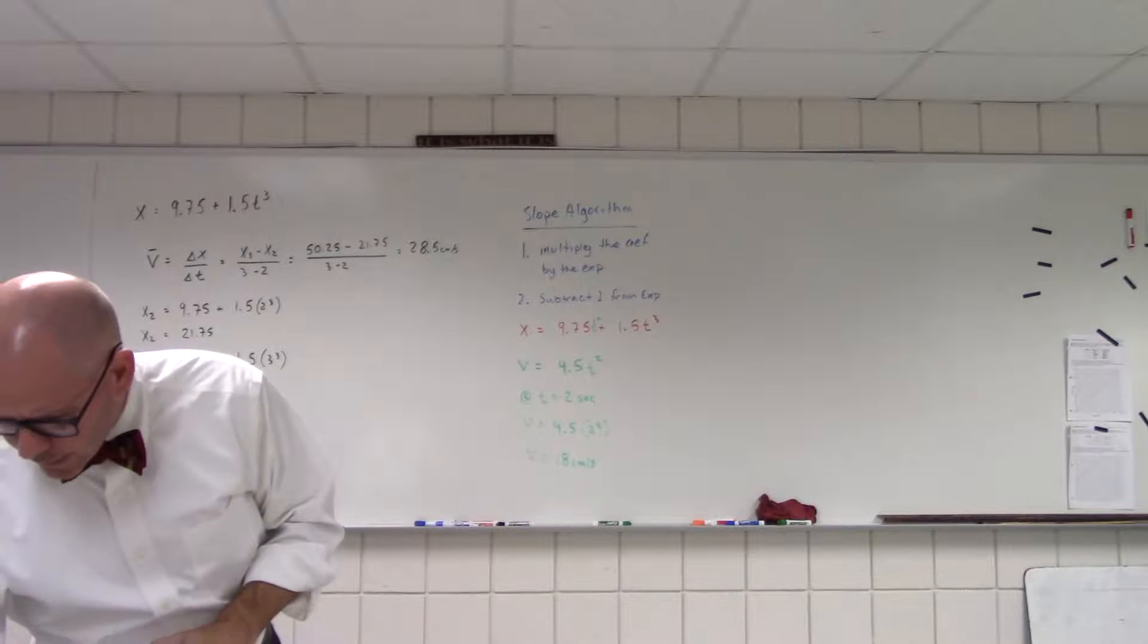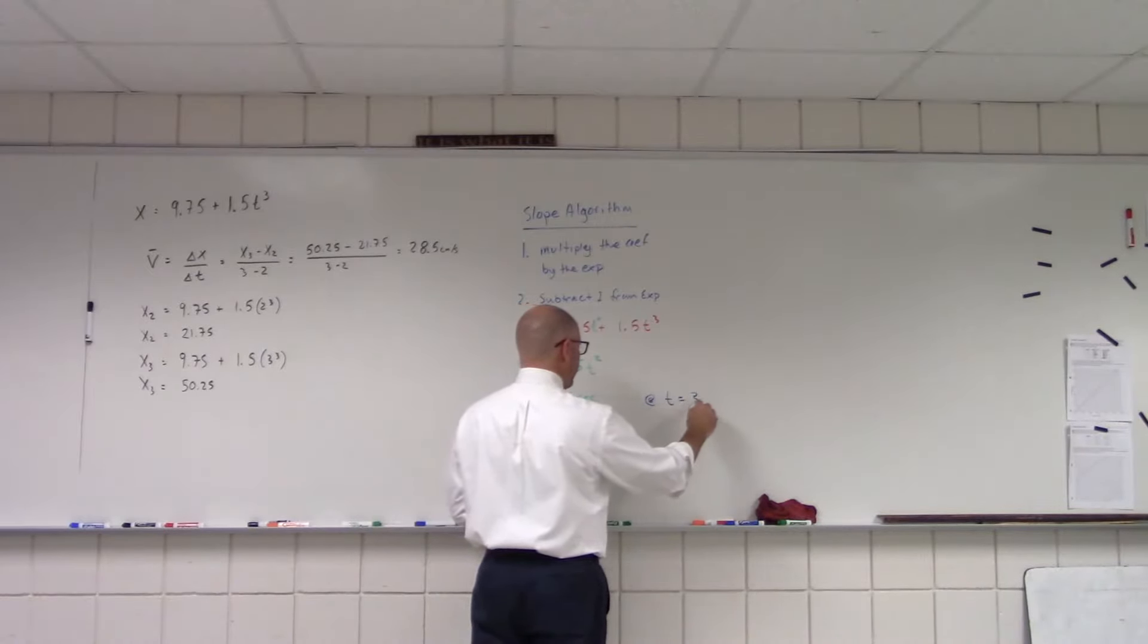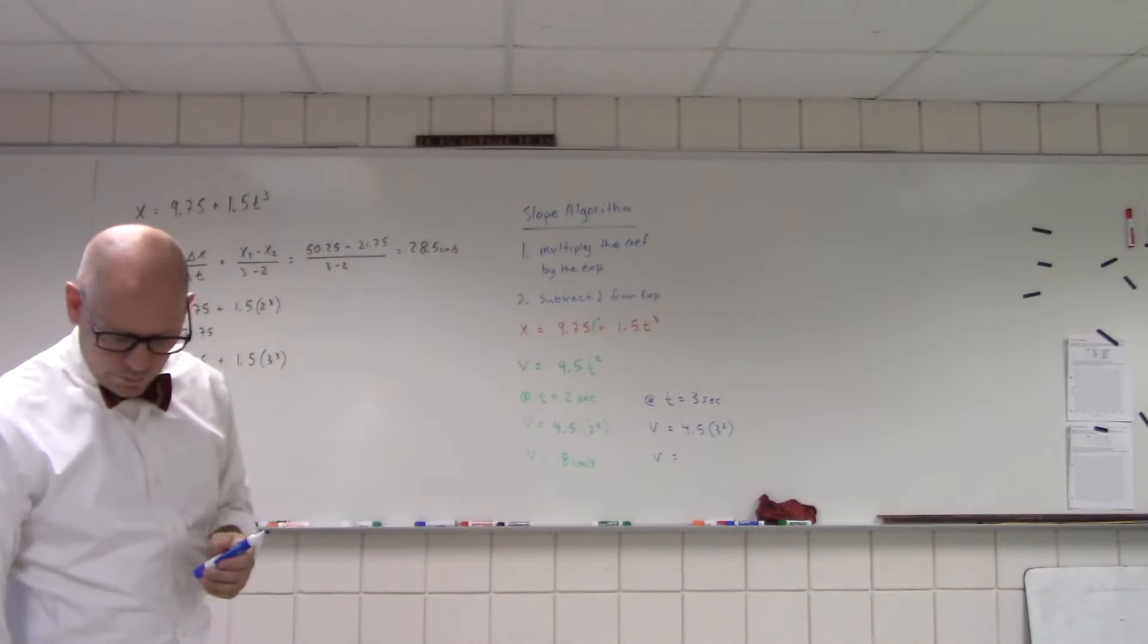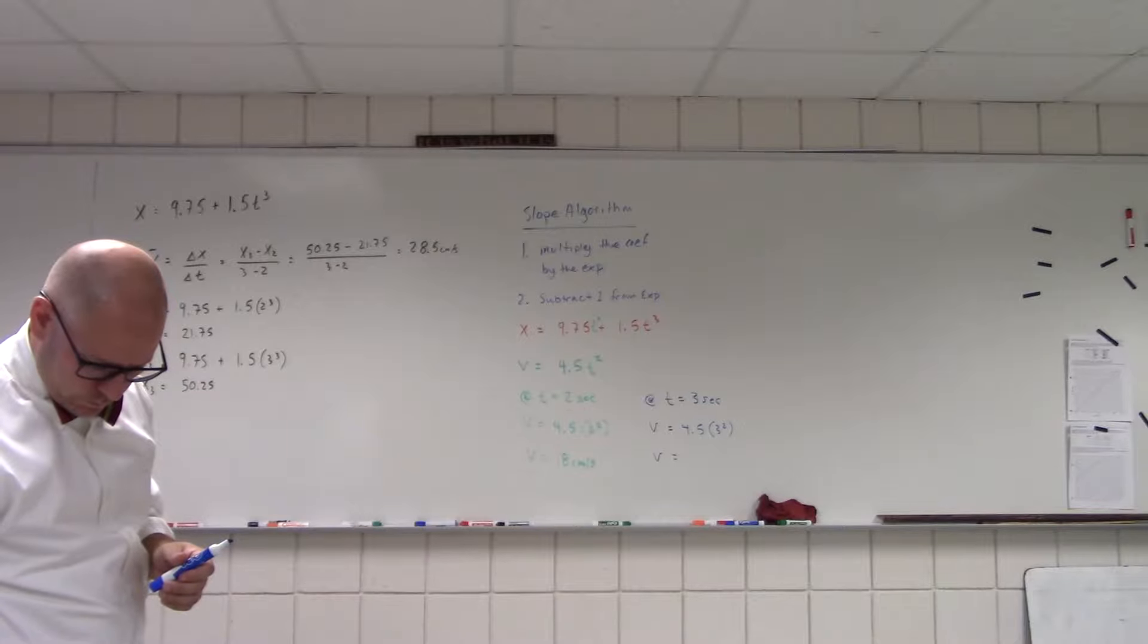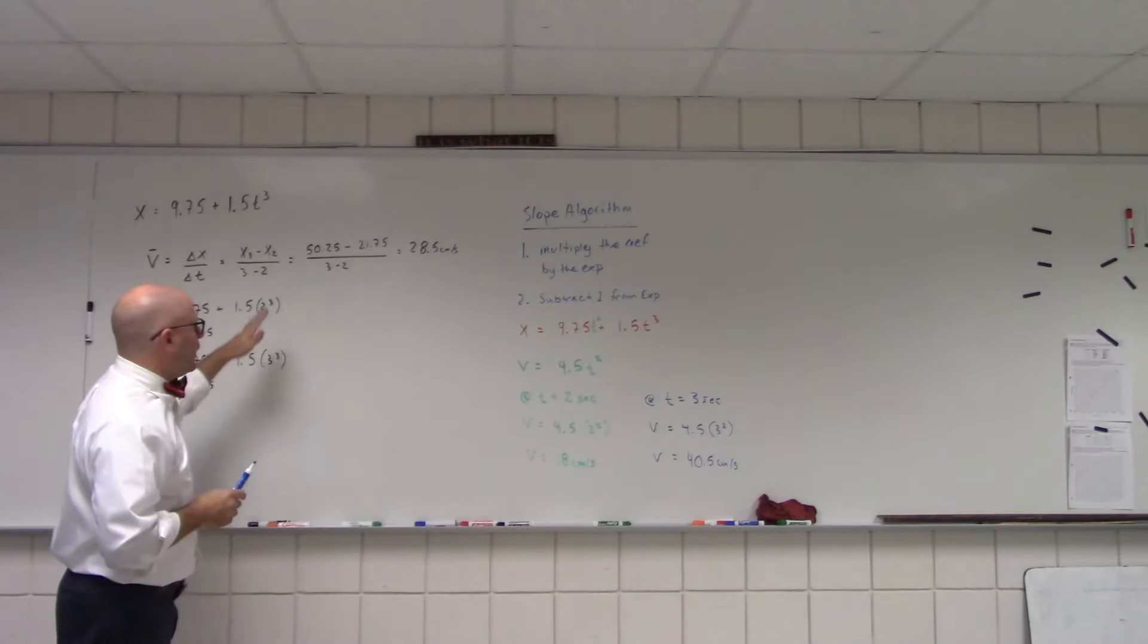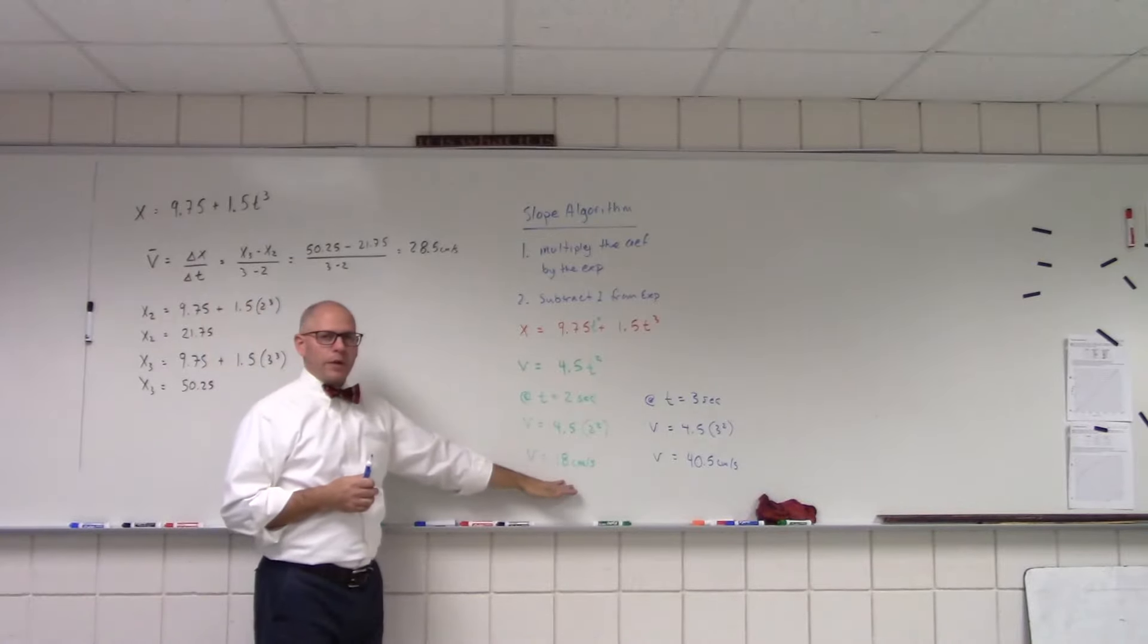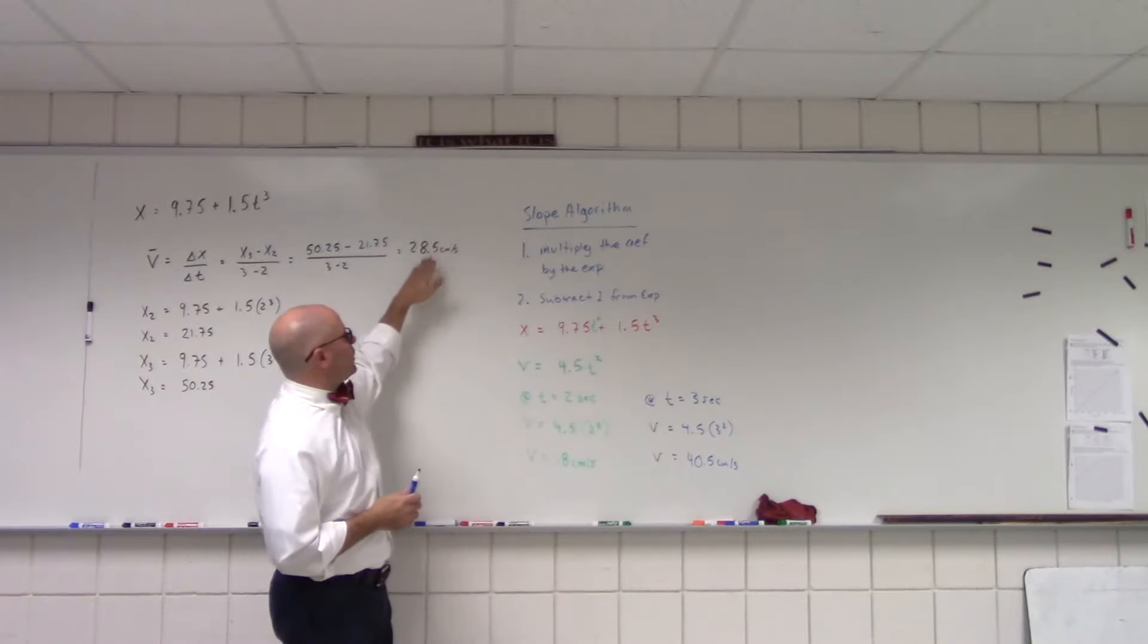Part C asks, what's the instantaneous velocity at t equals 3 seconds? Oh, no problem. We can do that now because I have my velocity function. So, at t is equal to 3 seconds, now I have 4.5 times 3 squared. And I think the reason they're asking this is they said, look, let's take the average velocity, the average velocity between 2 seconds and 3 seconds, and we got it in the 28 range. Well, at 2, the velocity was only 18. At 3, the velocity is 40. So, it makes some sense that it should be between 18 and 40. And we see here it's 28.5.